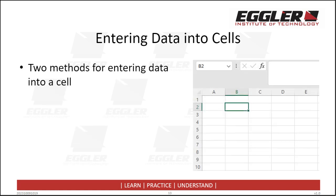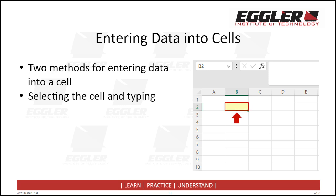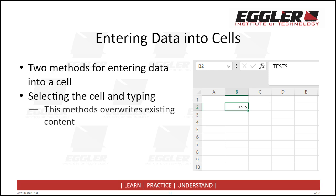There are two methods for entering data into a cell. The first method: simply select the cell and begin typing. If you wrote the word 'test', the cell contents will be replaced with 'test'. However, if you noticed a typo and it should have been 'tests', using this method to correct the typo will overwrite any existing text. This is not a big deal for a small amount of text, but could be very annoying if you had a large paragraph that needed to be retyped.